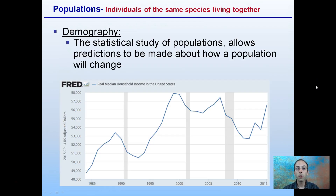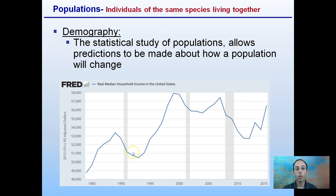Starting with populations — what's a population? Populations are individuals of the same species living together. Demographics are the statistical study of populations, which allow predictions to be made about how a population will change. Looking at past data and past influences, we can make a prediction — it doesn't necessarily mean that's how it will turn out, but it gives a prediction on how that population may change over time, sometimes going up and down in a predicted pattern.